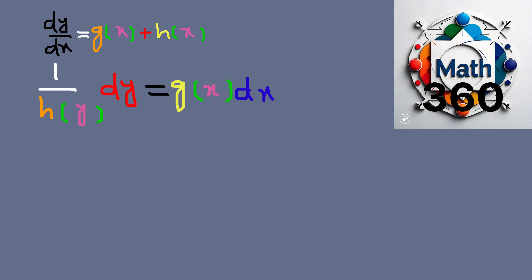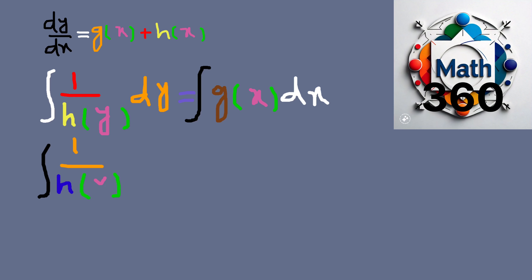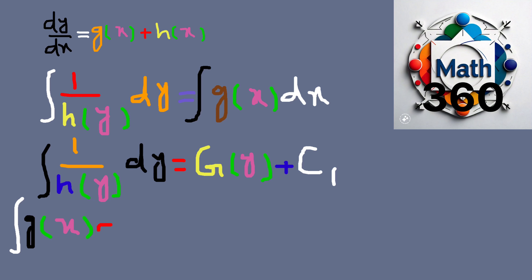Integrate the equation with respect to y on the left side and x on the right side. The equation becomes: integral of 1 over h of y dy equals integral of g of x dx. The integration gives two antiderivatives — the left side yields G of y plus c1, and the right side yields H of x plus c2, where G of y and H of x are antiderivatives and c1 and c2 are constants of integration, since both sides of the equation equal each other.